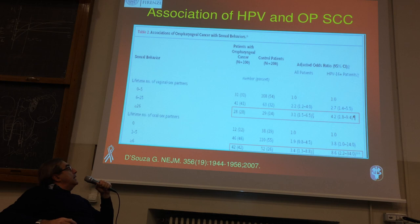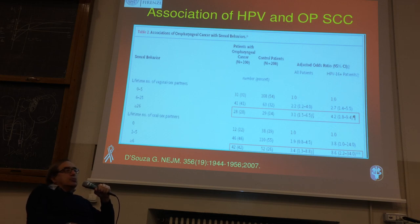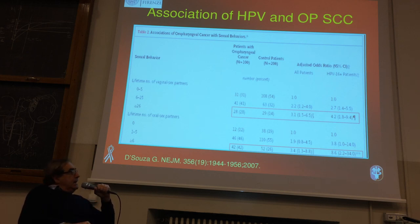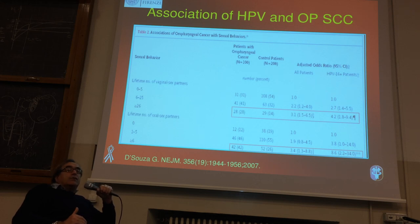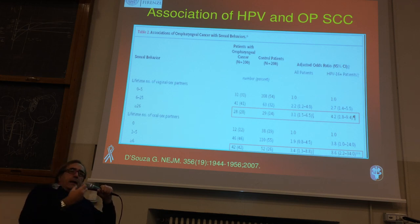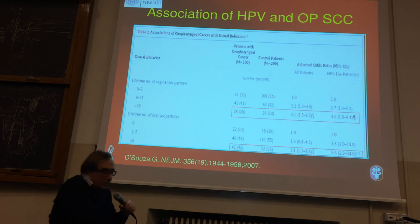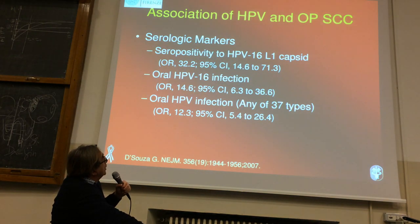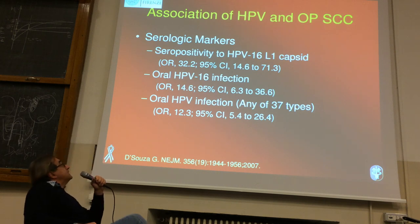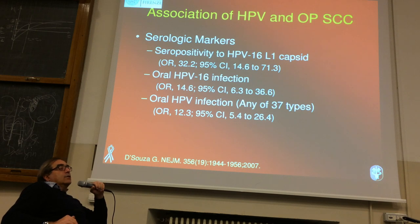Bastano circa 10-12 partner diversi, negli Stati Uniti dove la diffusione dell'HPV è molto elevata, per avere un rischio quasi 9-10 volte superiore rispetto al controllo di sviluppare un carcinoma orofaringeo negli anni. Le previsioni indicano che questo potrebbe diventare il primo tumore del distretto testa-collo a partire dal 2020-2025, superando di gran lunga i carcinomi del cavo orale e della laringe.